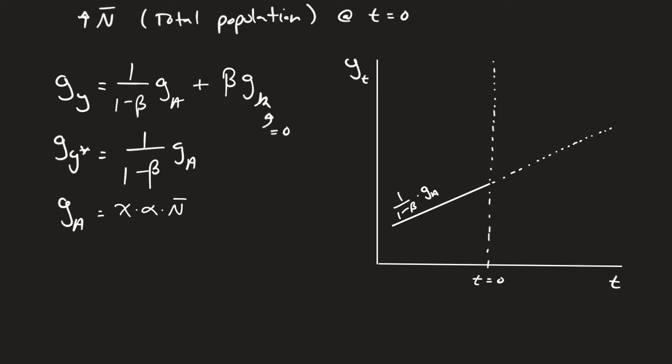Now what happens when n bar increases? At first, think of what y is - it's overall production divided by total population. If n bar goes up, then y/n goes down, which means initially we'll have a drop in output per person. We'll see an initial drop right here. This makes sense - if a bunch of people get dropped into a society, output per person has to go down at the beginning.